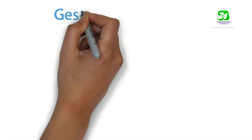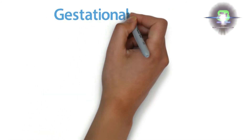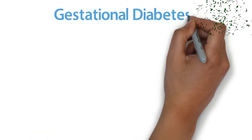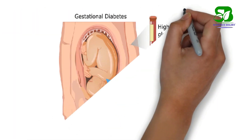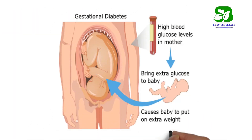Gestational diabetes develops in some women when they are pregnant. Most of the time this type of diabetes goes away after the baby is born.